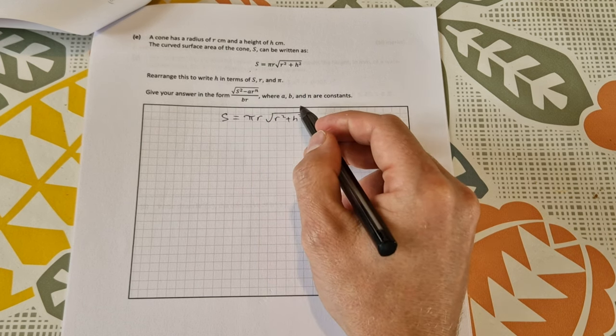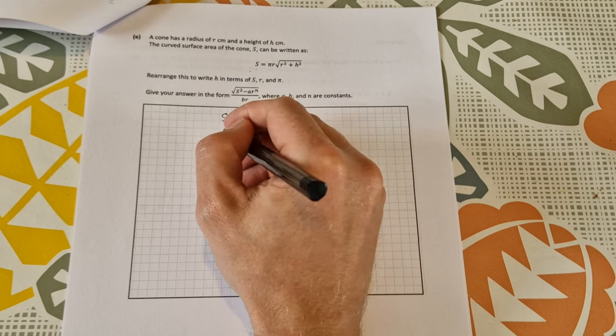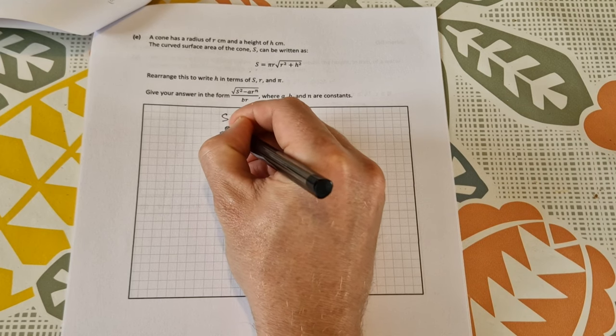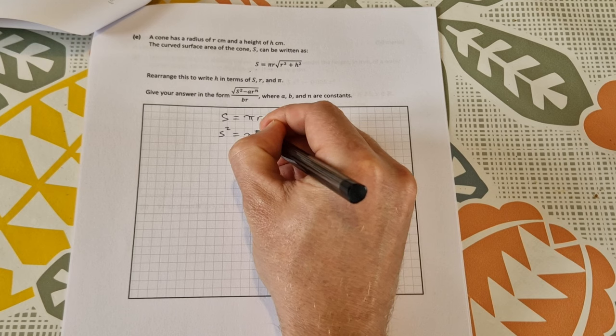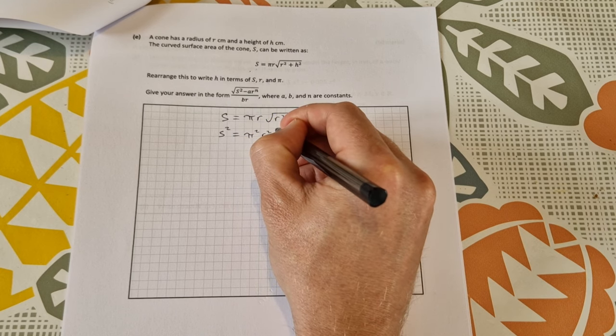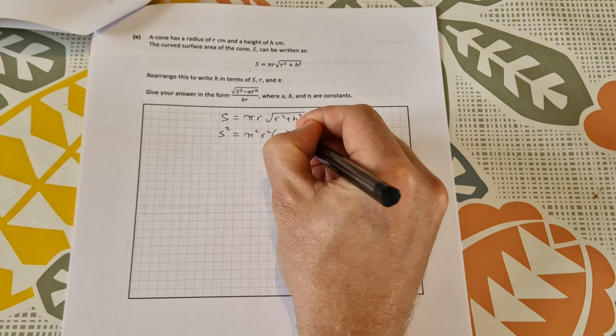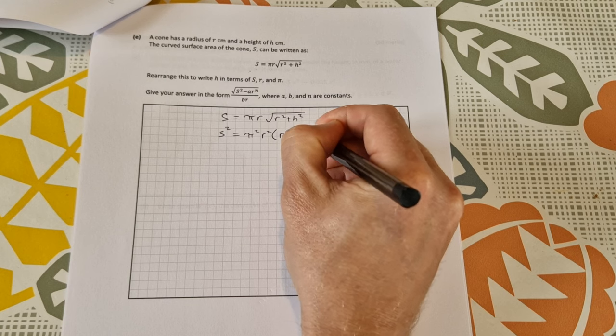So we start off with s is equal to pi r times the square root of r squared plus h squared. Well, the first thing I need to do is get rid of this square root sign. So I'm going to square both sides. If I square s, I get s squared. If I square this side, I'll get pi squared, r squared. And then I'll get times r squared plus h squared.